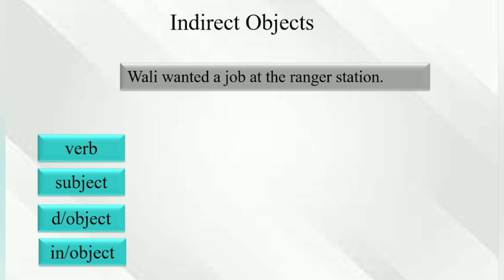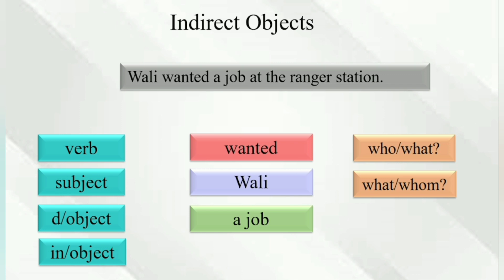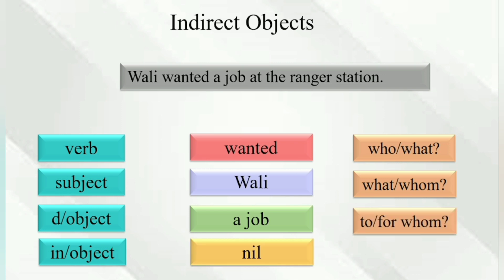'Really wanted a job at the radio station.' Wanted — who wanted? Really. Wanted what? A job. A job to whom or for whom? There isn't any answer for this, so in this sentence we have only a direct object and no indirect object.